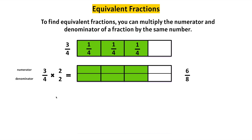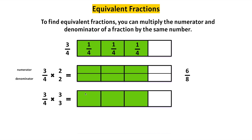Let's find another equivalent fraction for three-fourths. This time let's multiply the numerator by three and the denominator by three. Let's make a model of three-fourths and make three times as many numerators and three times as many denominators. One, two, three.